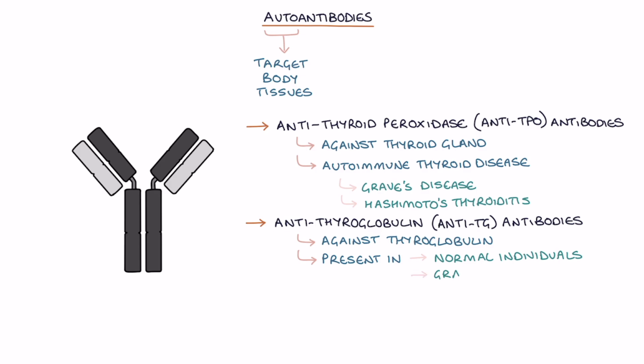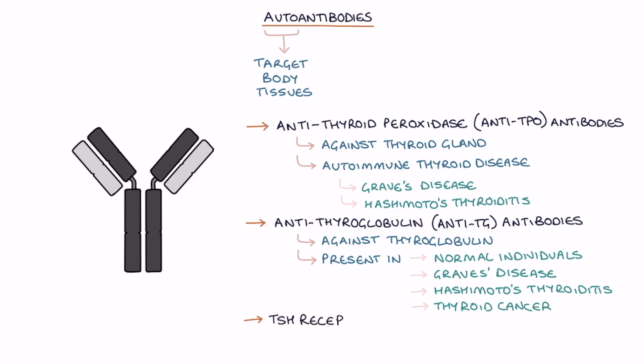Anti-TG antibodies are usually raised with Graves' disease, Hashimoto's thyroiditis, and thyroid cancer. TSH receptor antibodies are autoantibodies that mimic TSH, binding to the TSH receptor and stimulating thyroid hormone release. TSH receptor antibodies cause Graves' disease and therefore they'll be present in this condition.